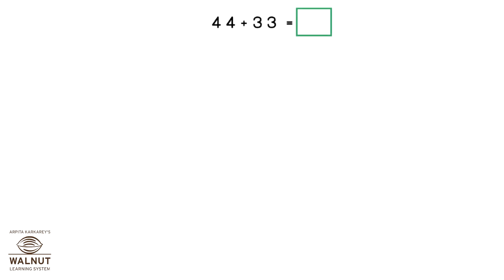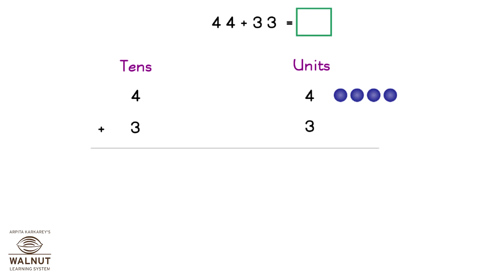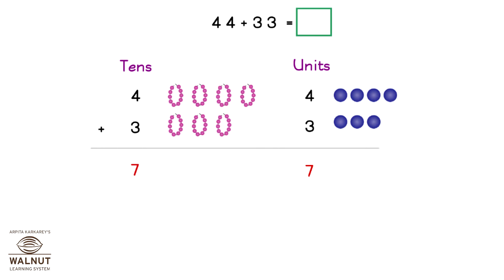Look at this problem: 44 plus 33. We will split both the numbers into tens and units. So for 44, we have four tens and four units. For 33, we have three tens and three units. We add the units: four plus three is seven. We add the tens: four plus three is seven. The number that we have is seven tens and seven units, which is 77. That is the answer.